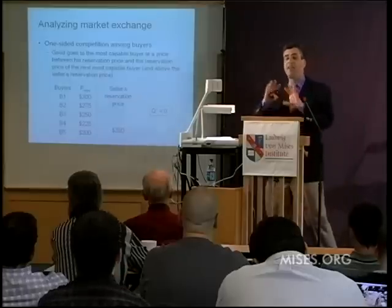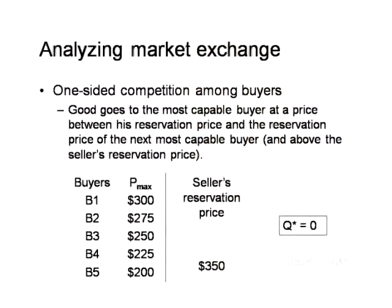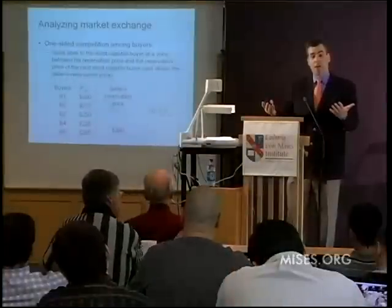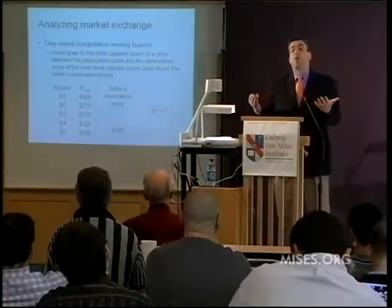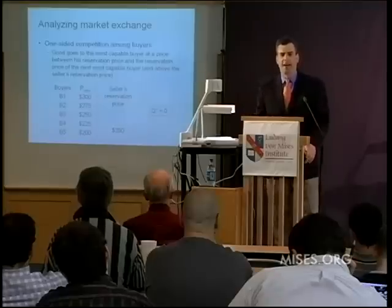A slight variation: suppose the seller's reservation price is greater than the reservation price of the most capable buyer. In that case, there are no feasible gains from trade. No buyer is willing to pay as much as the seller requires, so the equilibrium quantity is zero — there will be no exchange. No matter the rank ordering of preferences among buyers, there must be at least one buyer willing to pay what the seller asks.